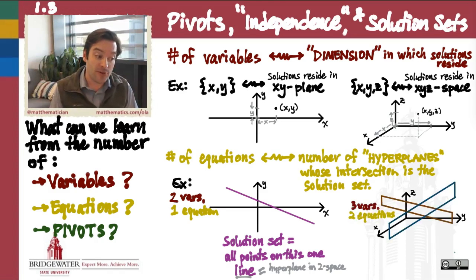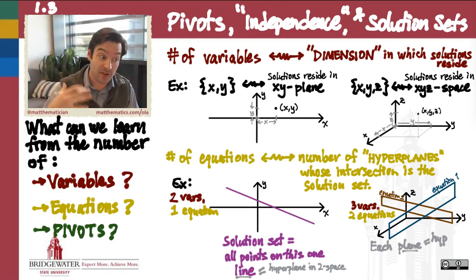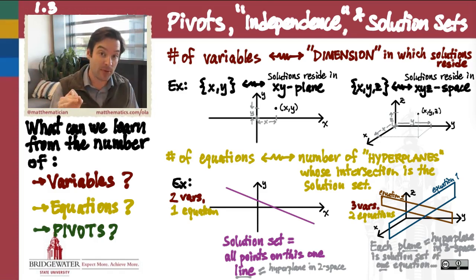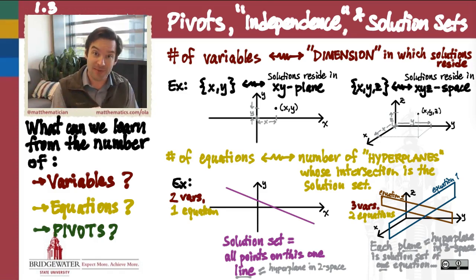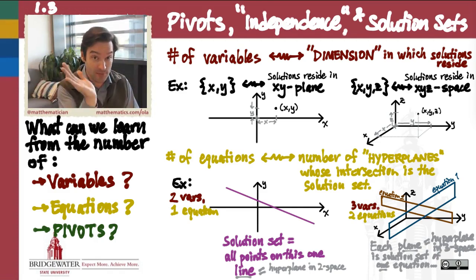What if I have three variables and two equations? Well, the fact that I have three variables means that my solution set has to live inside of a three-dimensional space — x, y, z space — and my two equations each are going to define for me a hyperplane in three-space. In three-dimensional space, a hyperplane means a two-dimensional object, which is going to look like a plane — what we often just call a regular two-dimensional plane sitting inside of three dimensions.